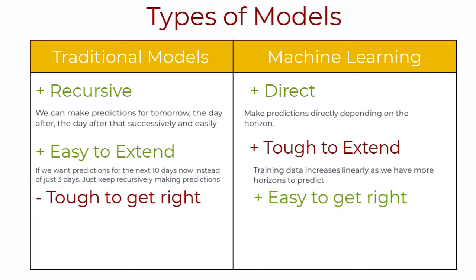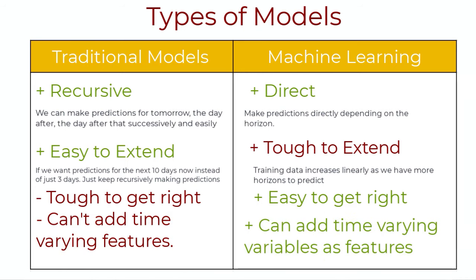Third difference: traditional time series approaches can be pretty tough to get right unless you're an expert, while the machine learning approach is a lot more tractable for people who don't know much about time series forecasting — although Prophet models are an exception here. Fourth difference: univariate time series models can't add regressors for which we don't know the future values, while machine learning models can add these regressors to better fine-tune predictions. Clearly, each has advantages and disadvantages, and depending on the problem, the data, and the hardware capacity, one solution may be more preferable than the other.